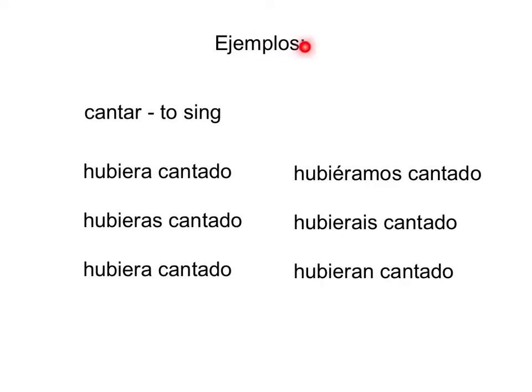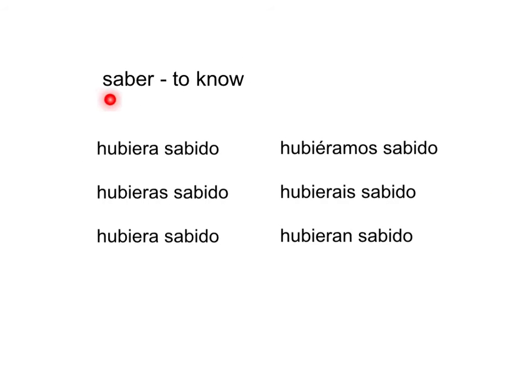Vamos a continuar con algunos ejemplos. El verbo cantar, to sing. Tenemos las conjugaciones del pluscuamperfecto del subjuntivo más el participio de pasado del verbo cantar: hubiera cantado, hubieras cantado, hubiera cantado, etc. Recuerden que para formar los participios de pasado de verbos -ar, se quita la -ar y se añaden las terminaciones -ado. Por eso tenemos cantado en todos los participios de pasado.